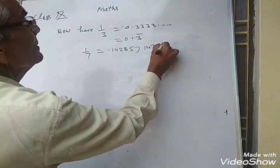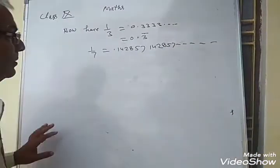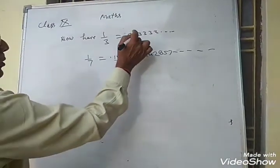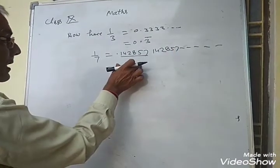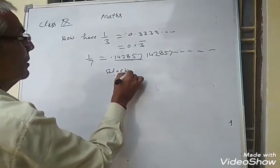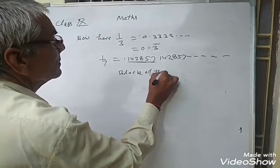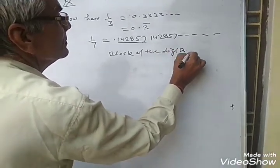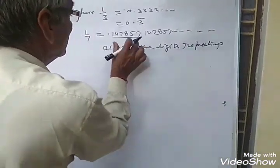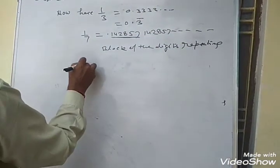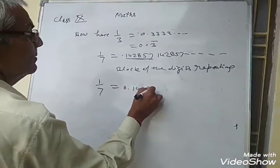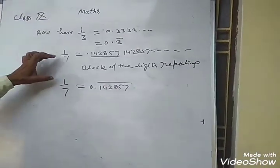...48, 28, 57, and so on — the total block of digits is repeating. We can write it in the form of 142857 with a bar over it. In short, we can write all these in the form of this bar notation.